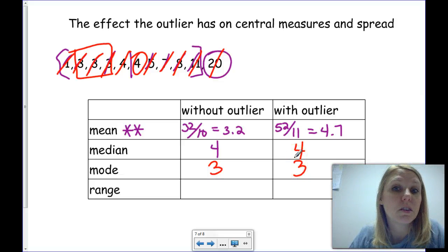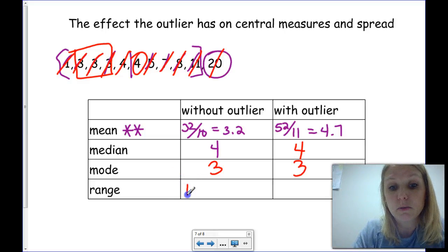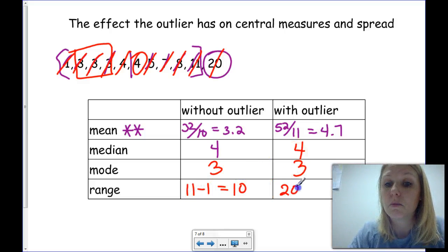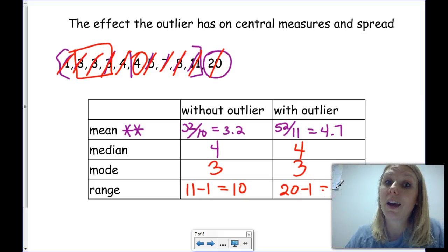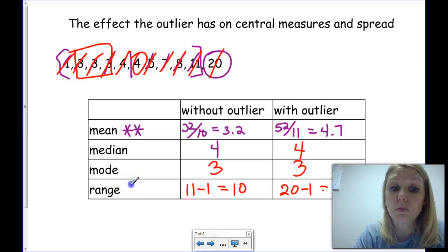What is the range? The range is always the largest number minus the smallest number. 11 minus 1 is the range for the first one, which is 10. And 20 minus 1 is the range for the second one. So, the outlier does affect the range as well.